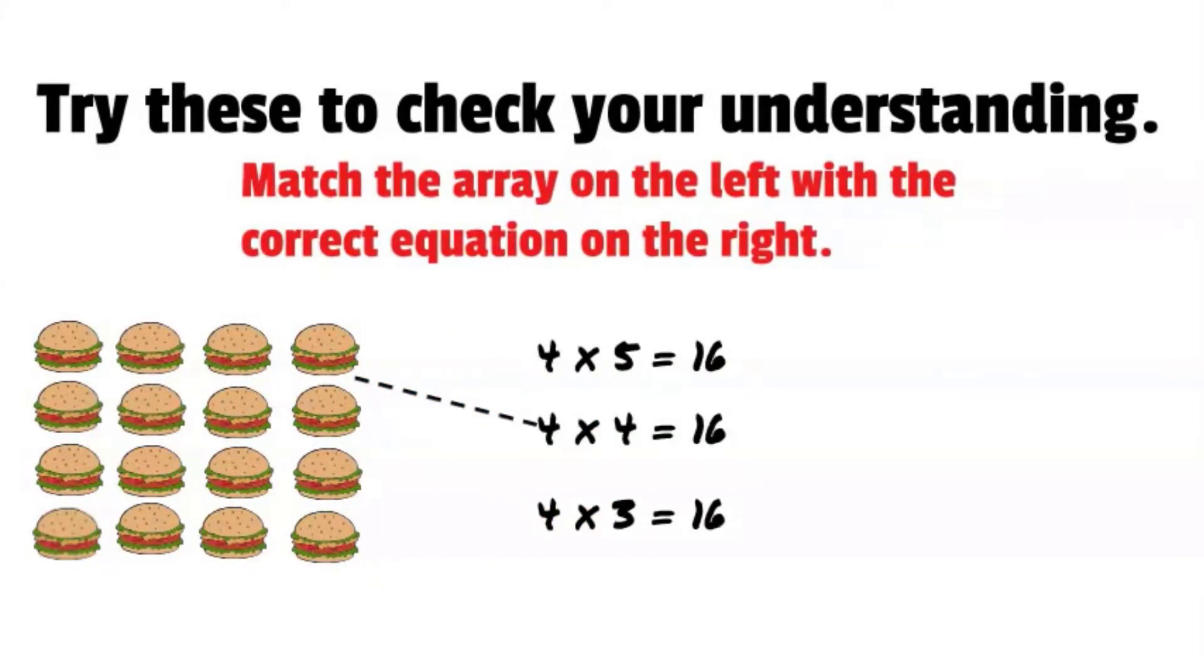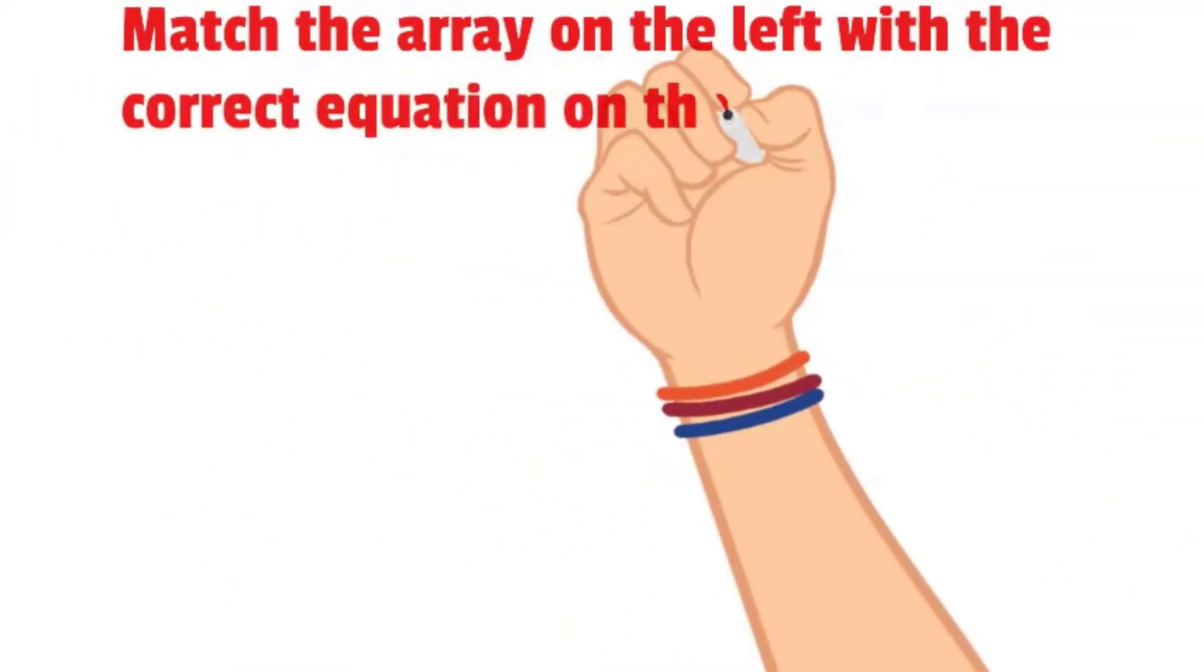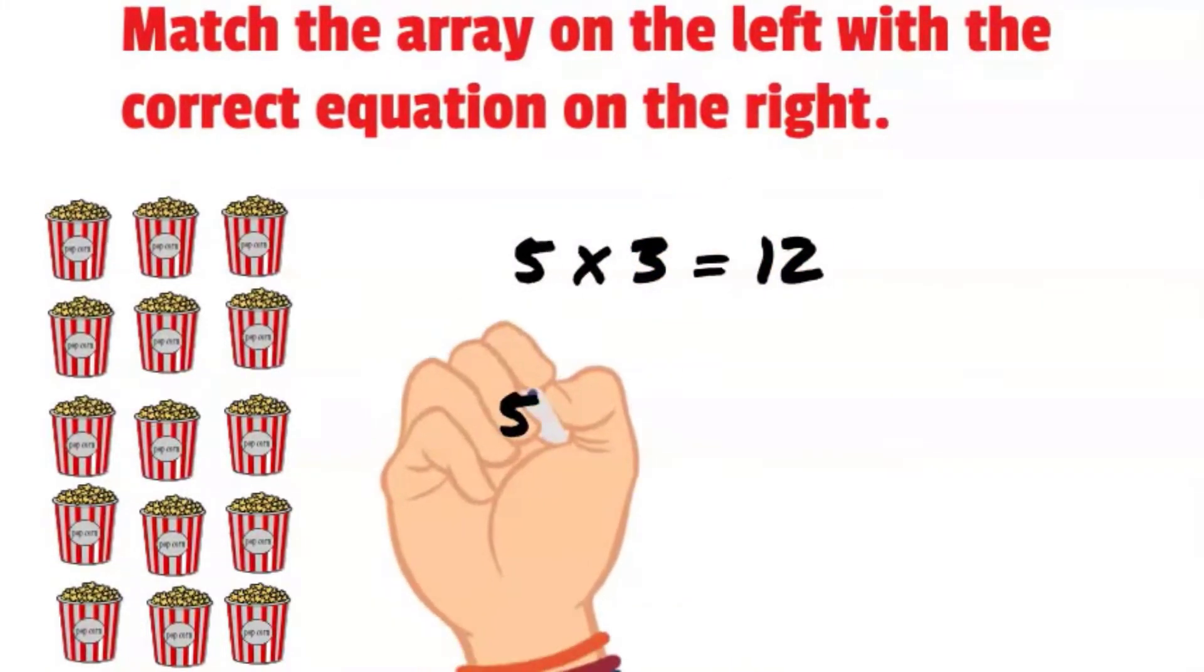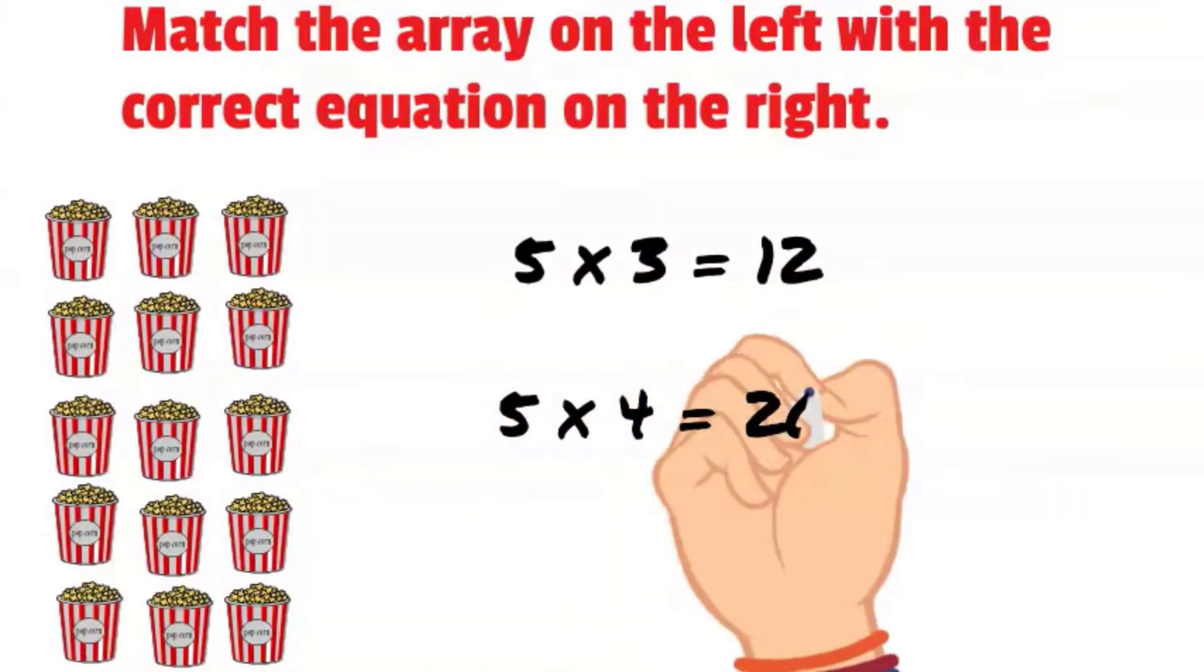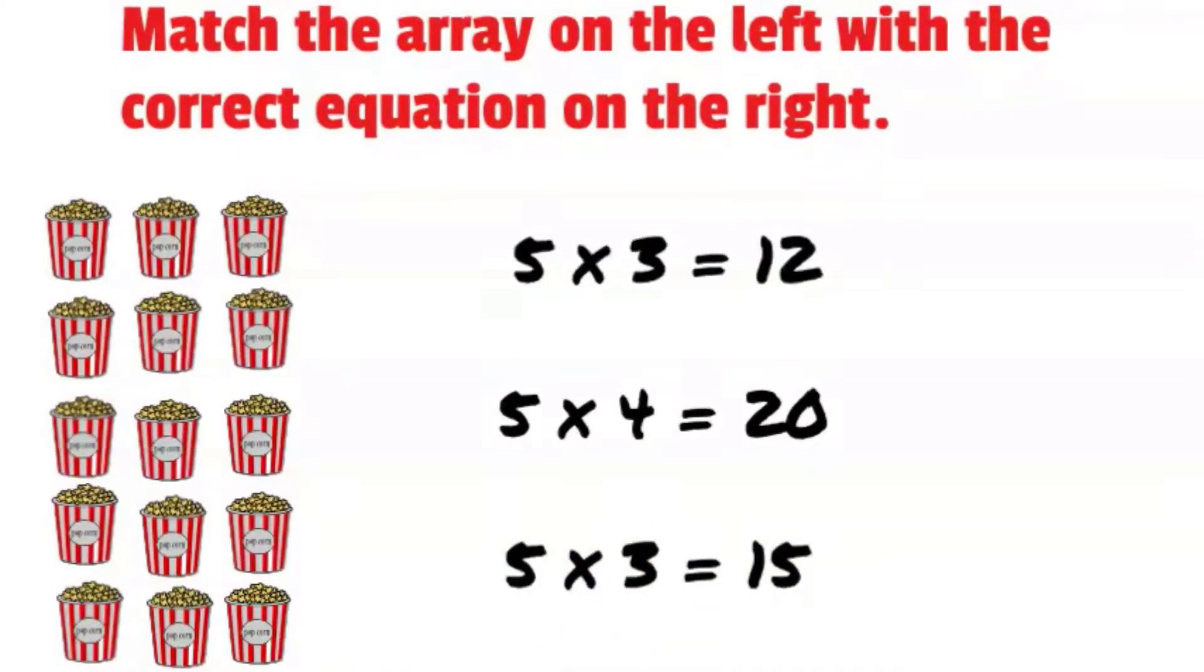Great job! Let's try another one. Again, you're gonna match the array on the left with the equation, the correct equation on the right. Count the rows, count the columns, add up the total amount.